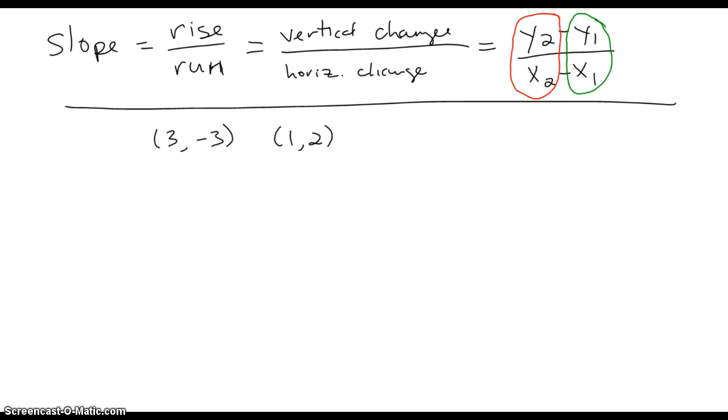y's go on top, x's go on the bottom. One point comes first here in the red circle, and one point comes second here in the green circle. For this example, for the first time here, I'm going to use this as my point 1, or the green circle, and this is my point 2, the red circle.